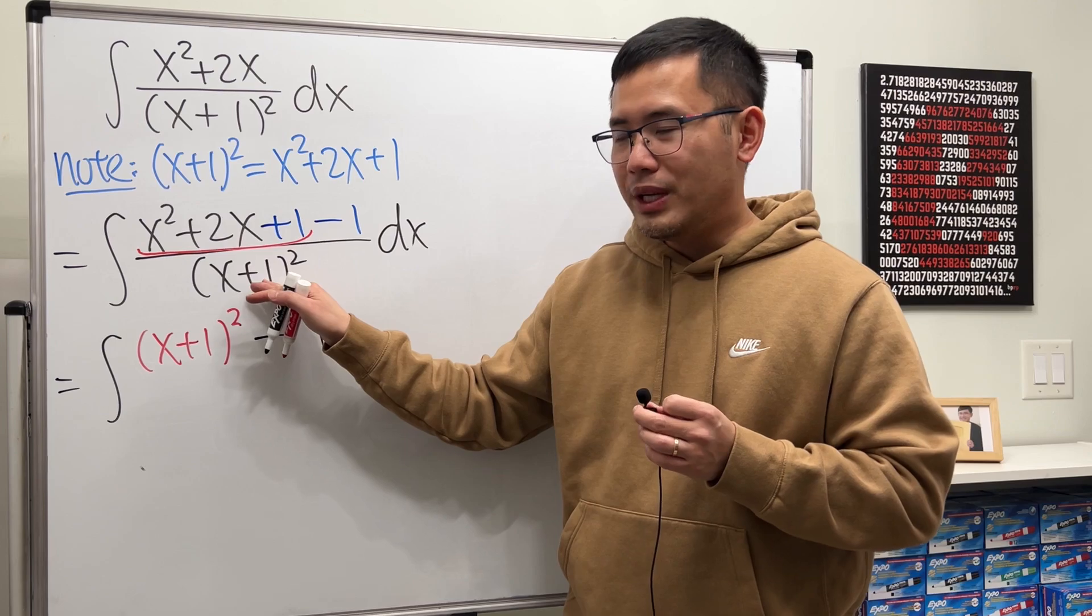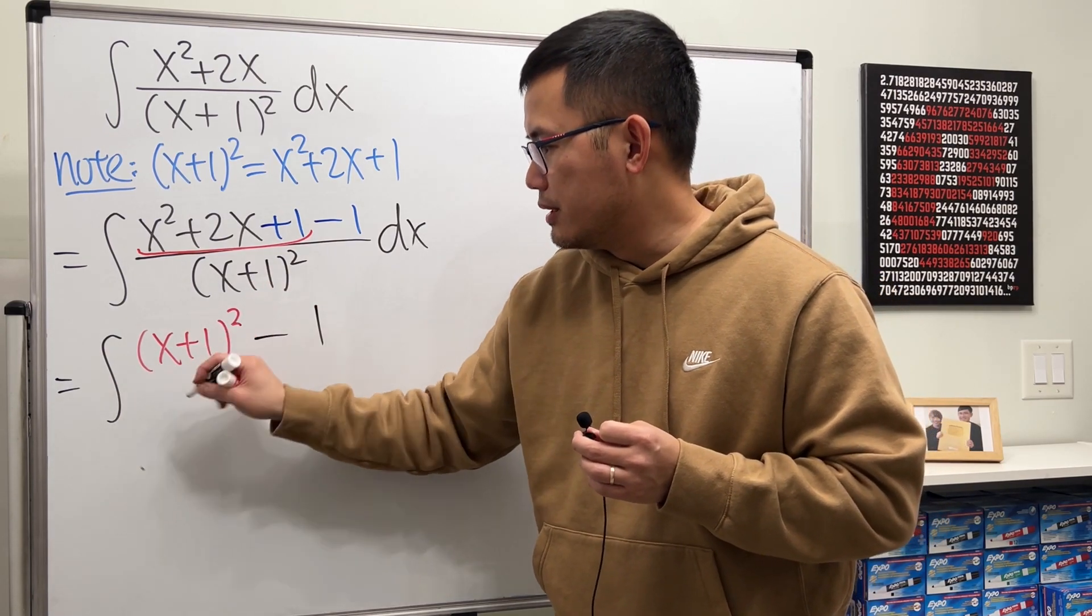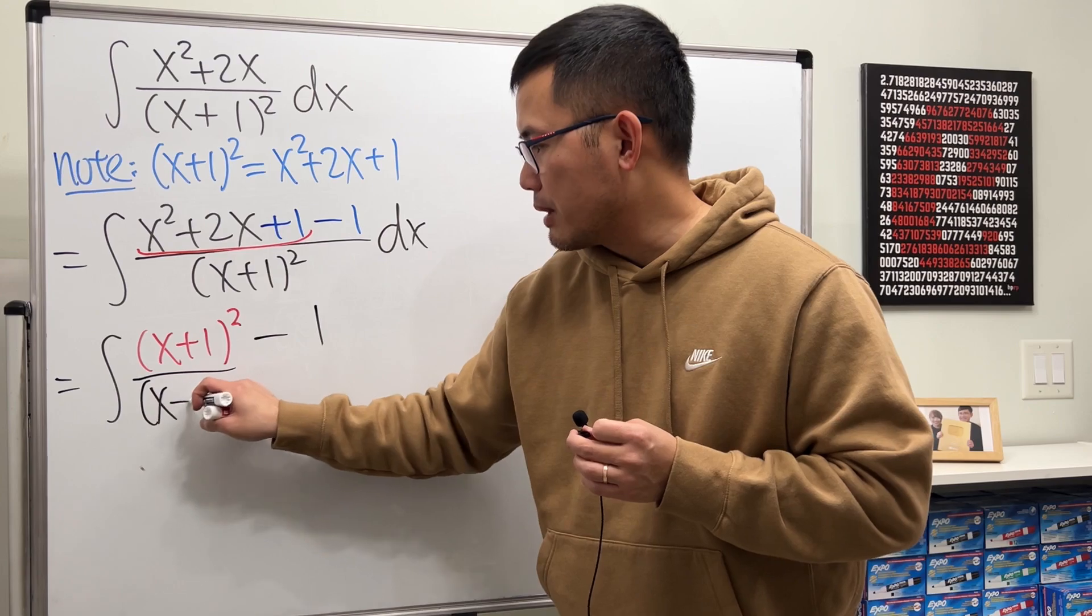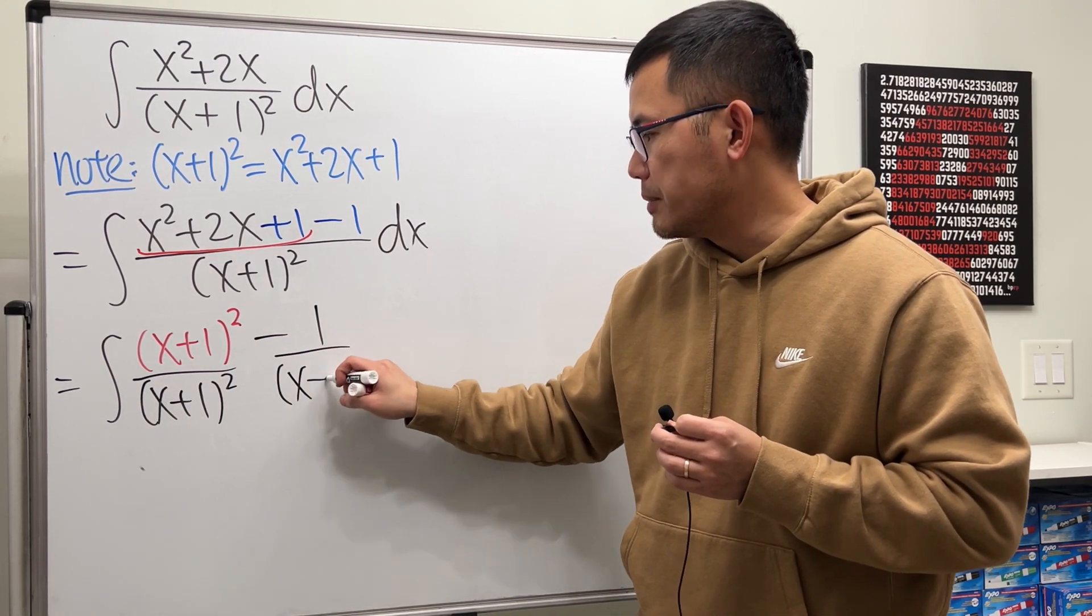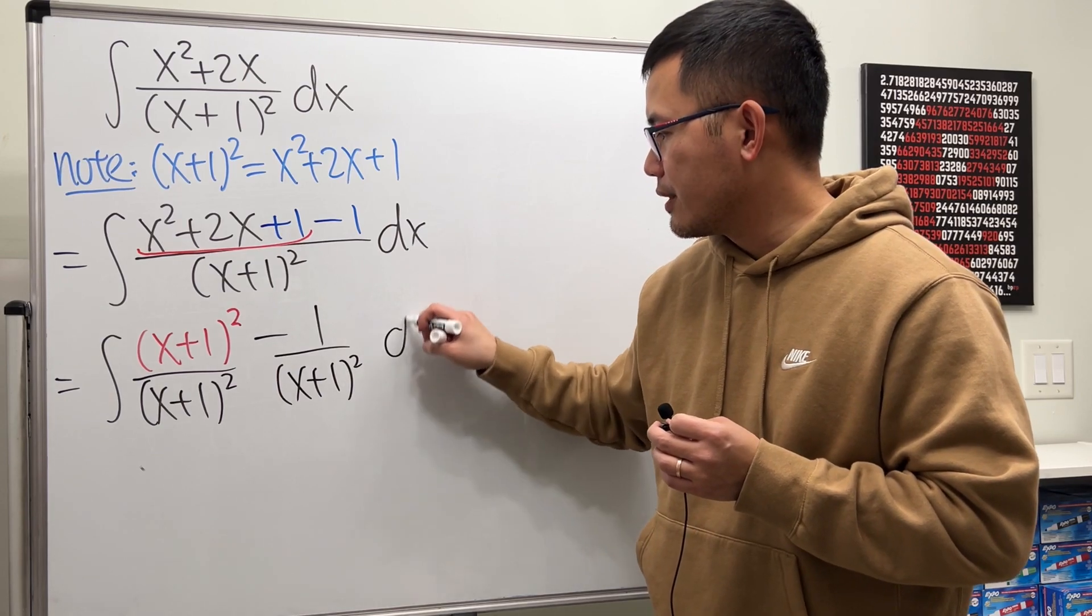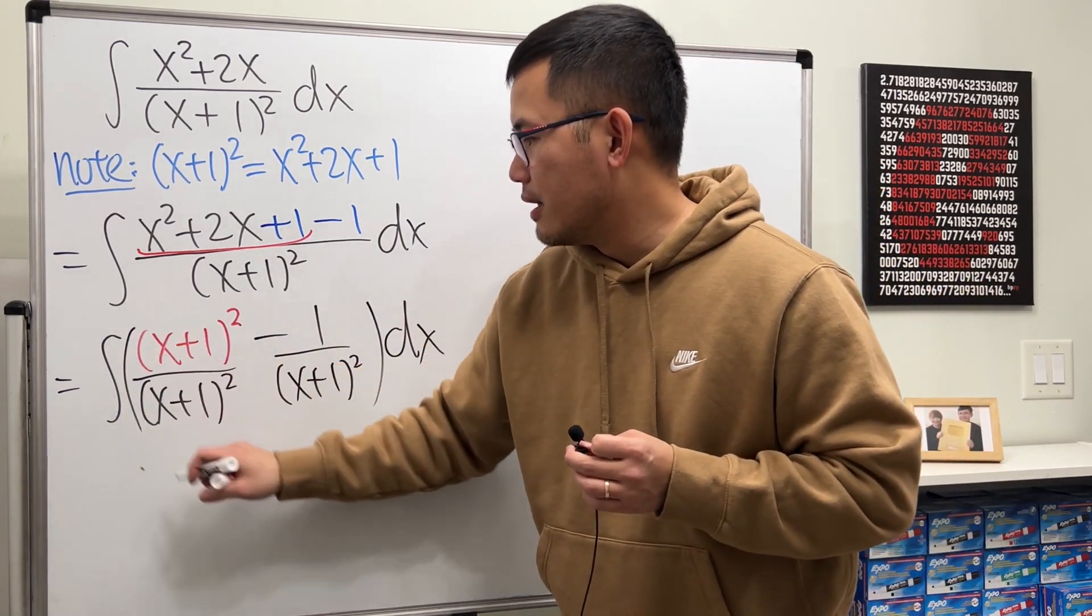And now we have this denominator, right? Just go ahead and put this over x plus 1 squared. And of course, give this the same denominator as well.